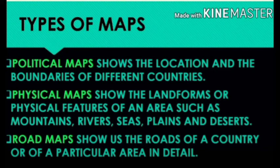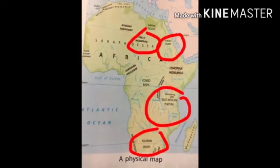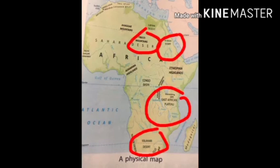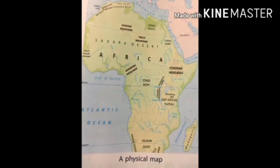The next map is a physical map. It shows the landforms or physical features of an area such as mountains, rivers, seas, plains, and deserts. This is a physical map of Africa, where we can see many deserts, plateaus, and other landforms.